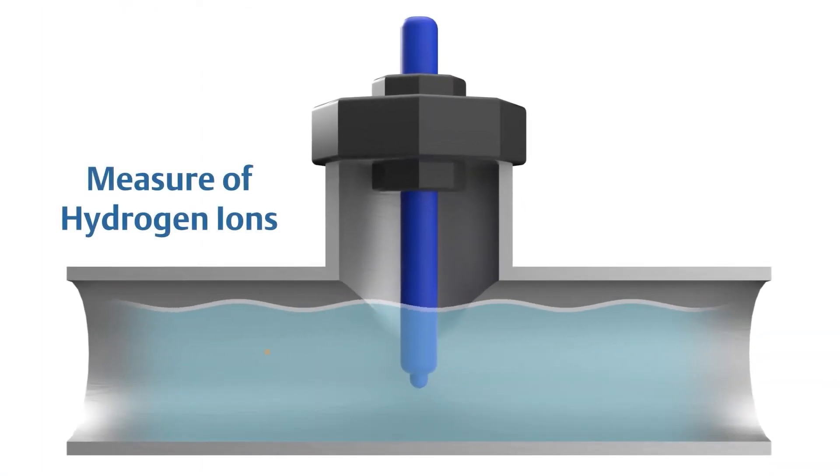pH is a measure of the concentration of hydrogen ions in a fluid. The most common method for online pH measurement is potentiometric glass pH sensors.